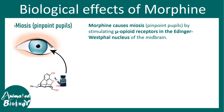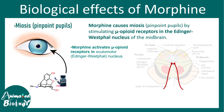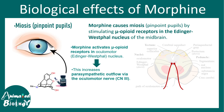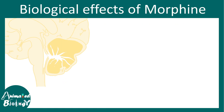Morphine can also lead to miosis, also known as pinpoint pupils, where the pupil becomes constricted. This happens because there are specific mu opioid receptors present in the Edinger-Westphal nucleus in the midbrain that are triggered by morphine. In the midbrain, there are oculomotor nerves, and morphine can bind within this oculomotor nerve complex. This increases parasympathetic outflow via the oculomotor nerve, ultimately leading to constriction of the pupil by triggering the sphincter pupillae muscles in the eye.